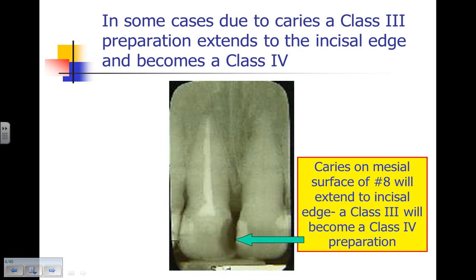In some cases, the caries may extend from a Class 3 lesion to include the incisal edge, and it becomes a Class 4. Here we're looking at a radiograph where the mesial surface of number 8 was carious, and by the time we prepare it, the thin spicule of enamel will be lost and it will become a Class 4 preparation.